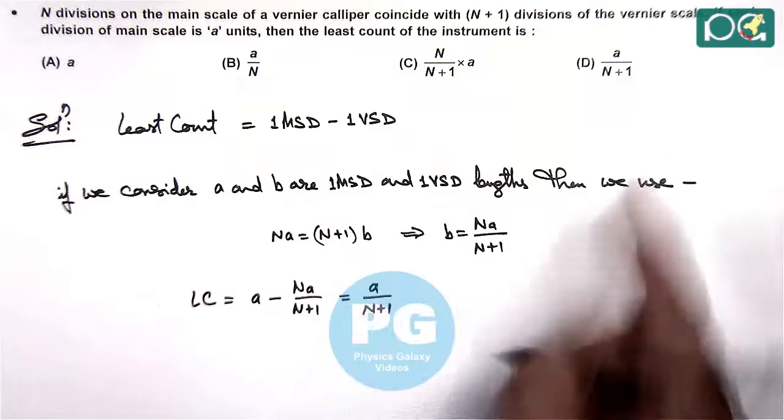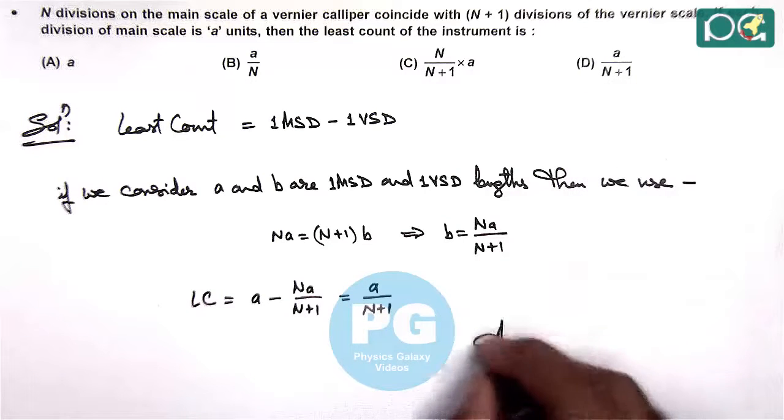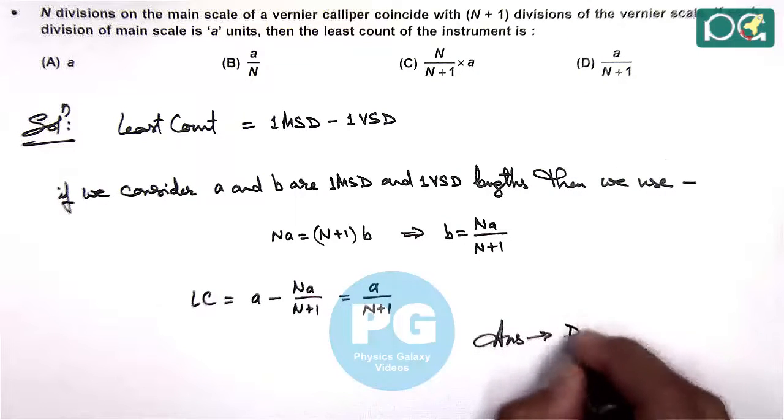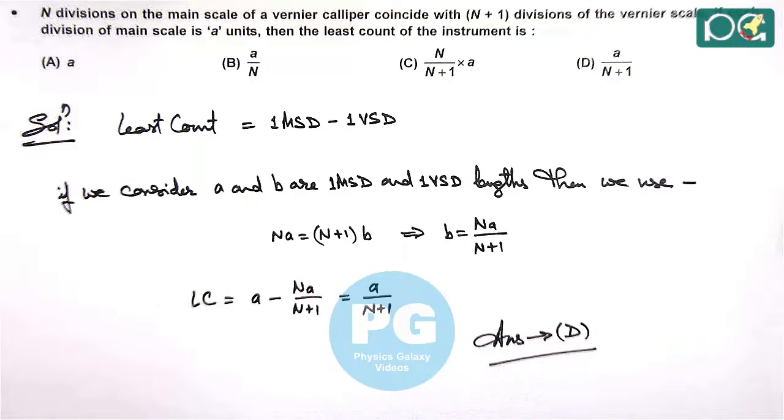So here A by n plus 1 matches with option D. So we will choose our answer of this question as option D.